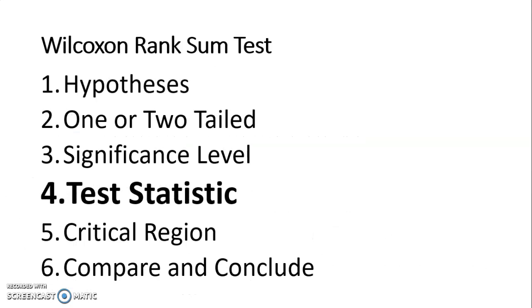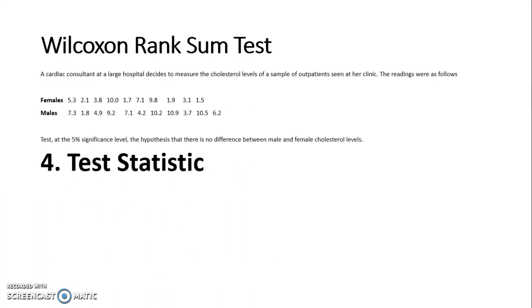Now the most difficult part of the question or the easiest place to go wrong is the test statistic. The test statistic for the Wilcoxon Rank Sum test has a few steps that we need to follow, and these are slightly different to our paired Wilcoxon tests. The first thing we need to do is rank all the data from smallest to largest across both data sets.